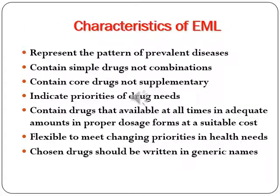Characteristics of the essential medicine list: it should represent the pattern of prevalent diseases, contain simple drugs rather than combinations, contain core drugs rather than supplementary ones, indicate priorities of drug needs, contain drugs available at all times in adequate amounts, be flexible to meet changing priorities, and chosen drugs should be written in generic names.